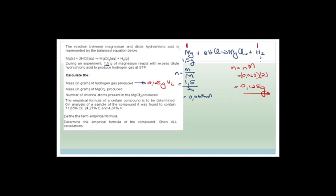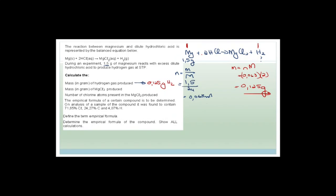We worked out the reaction between magnesium and dilute hydrochloric acid. It said during the experiment, 1.5 grams of magnesium reacts with excess dilute hydrochloric acid to produce hydrogen gas at SDP. It wants you to calculate the mass in grams of the hydrogen gas produced. What we did was we converted the mass of the magnesium to moles. Then we saw that the mole ratio was one to one, so we used the mole ratio multiplied by the molar mass of hydrogen to get the number of grams of hydrogen.